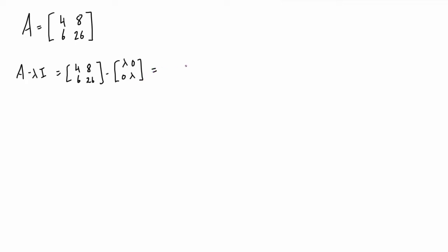This can be rewritten as basically just 4 minus lambda in the top left element, then 8, then 6, and then 26 minus lambda in the bottom right.